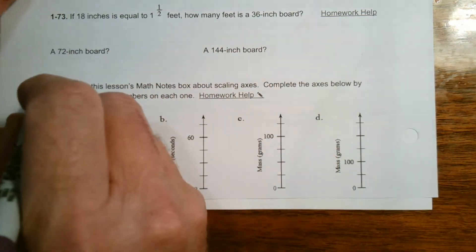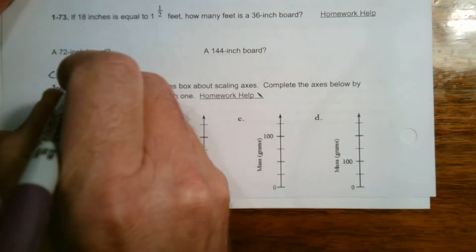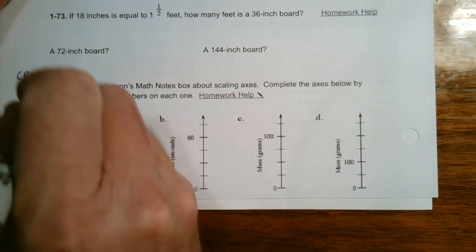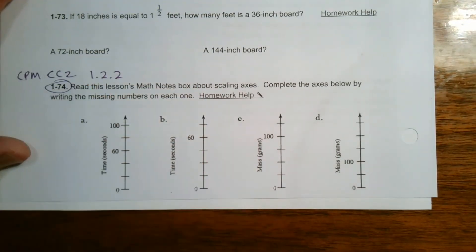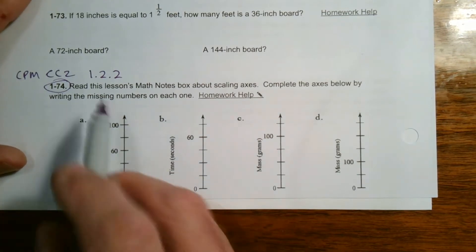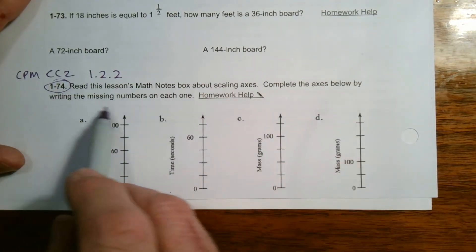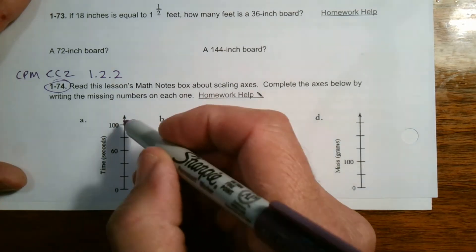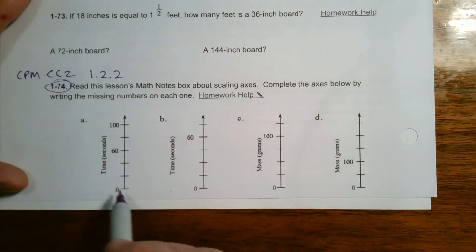So let's just look at this. This is taken from CC2, course 2, section 1.2.2, specifically number 1-74. It says to complete the axes below by writing the missing numbers on each one. We've got to look and see what information they give us. Then from there, we can write the right numbers in.